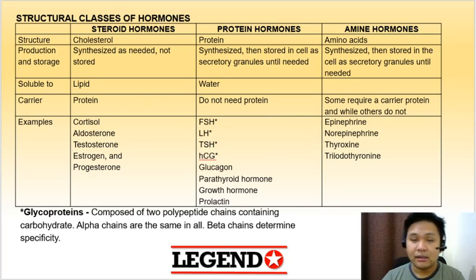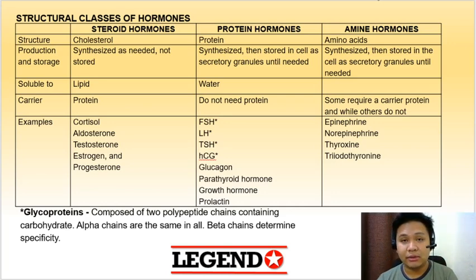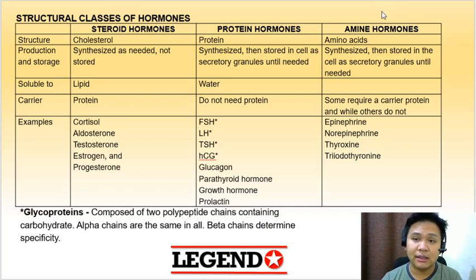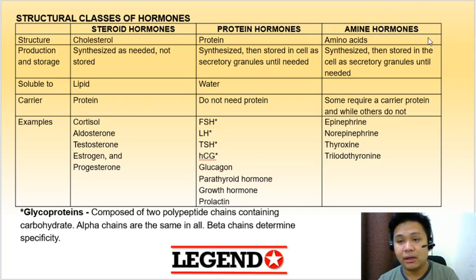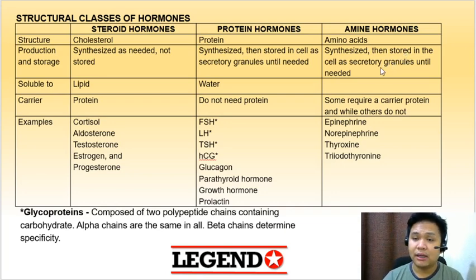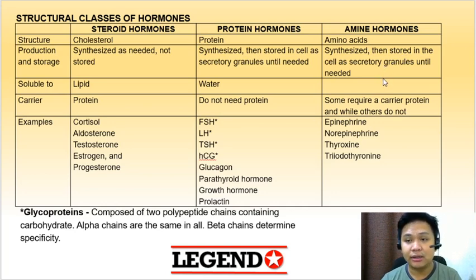The last structural class of hormones would be your amine hormones. Amine hormones are derived from the amino acid tyrosine. They are synthesized and stored in the cell as secretory granules until needed. Some require carrier protein, while others do not. Examples include your catecholamines, which include epinephrine and norepinephrine, as well as your thyroid hormones, thyroxine and triiodothyronine, or T3.